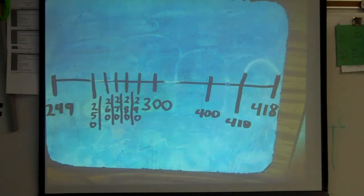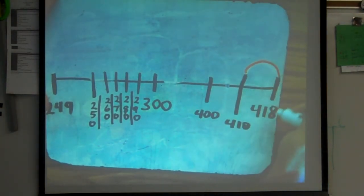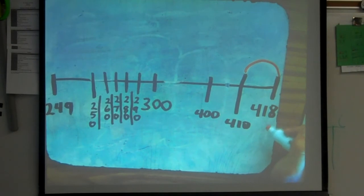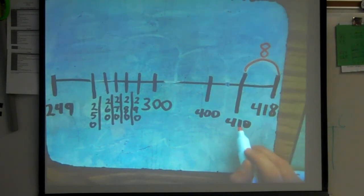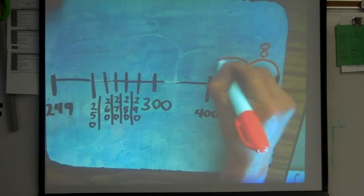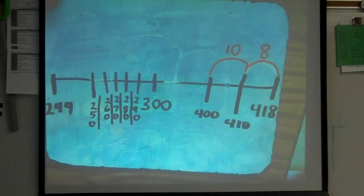They need to find their friendly 10. So, their next lowest 10 is 410. And then I ask them, how many did you take away to get there? They tell me we subtracted 8. We've got 410. I need them to tell me, what's their next friendly 100? Well, they know the 100 right below that is 400. 410 minus 10 gives me 400.